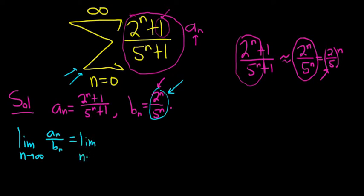So limit as n going to infinity. I'm going to go ahead and replace a sub n with what it is. So it's 2 to the n plus 1 over 5 to the n plus 1. Now we're dividing by b sub n. And so when you do that, you're really multiplying by the reciprocal. So this will be 5 to the n over 2 to the n.